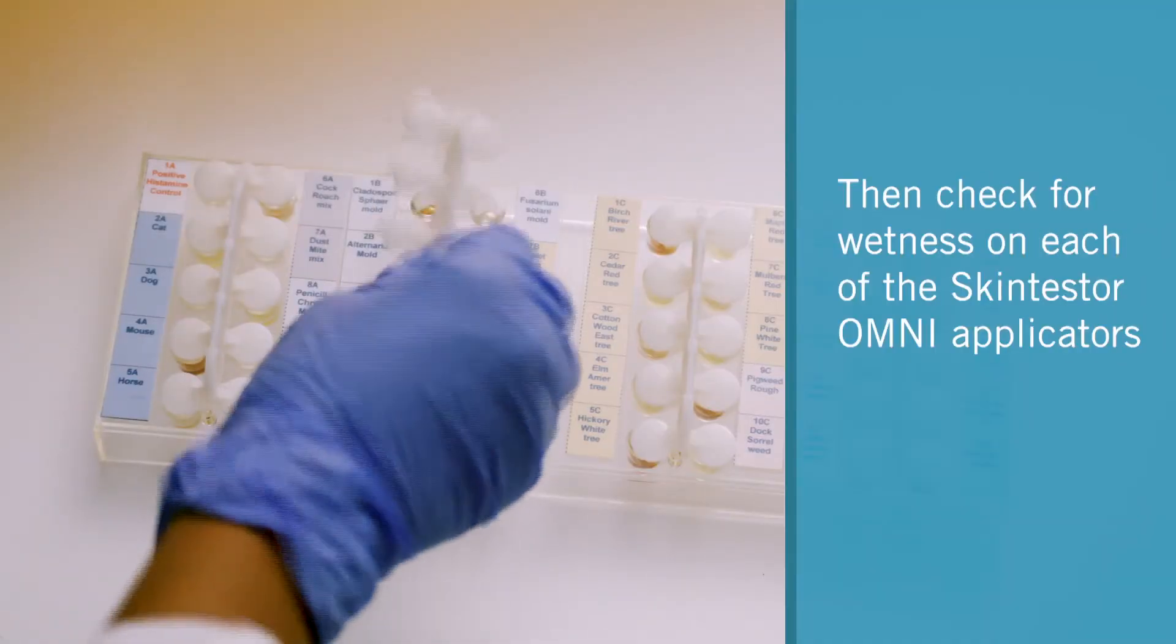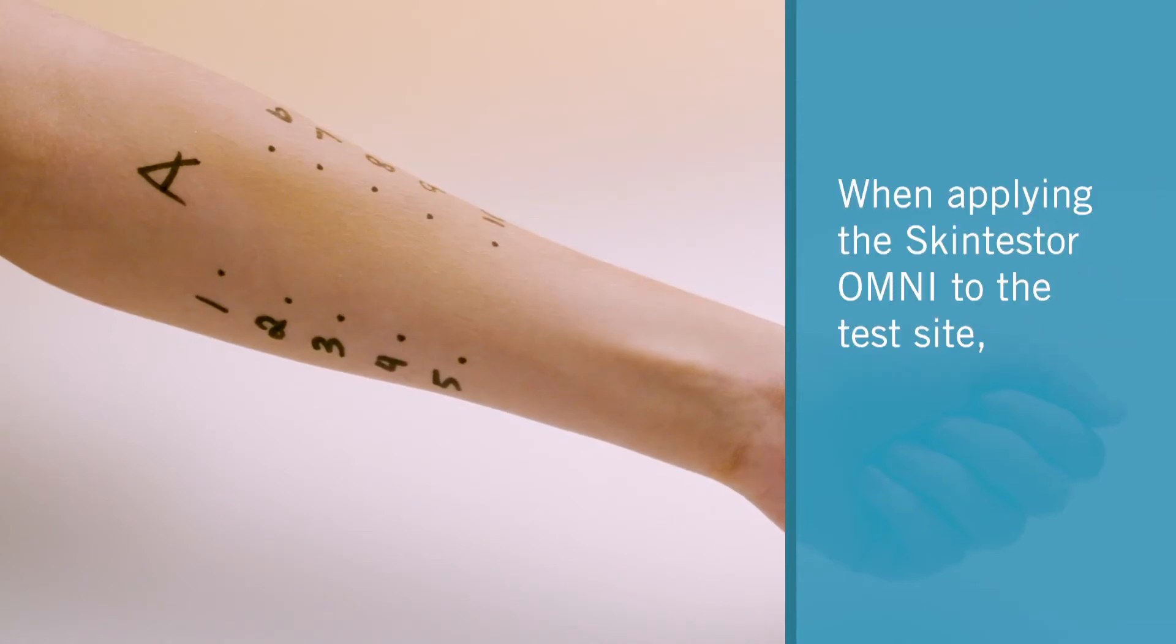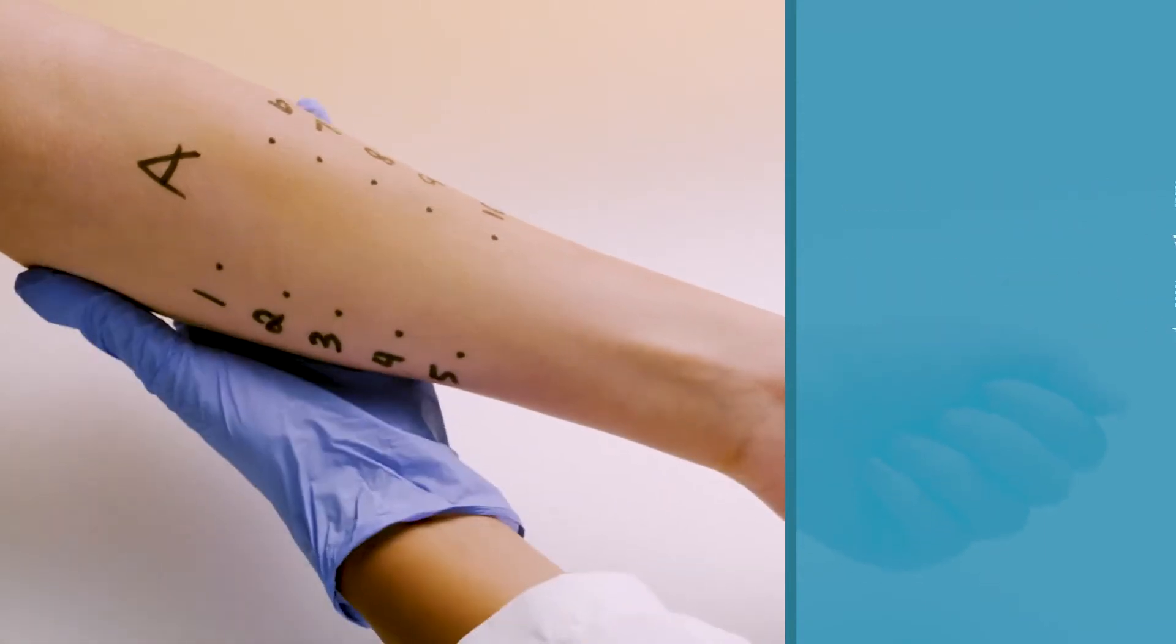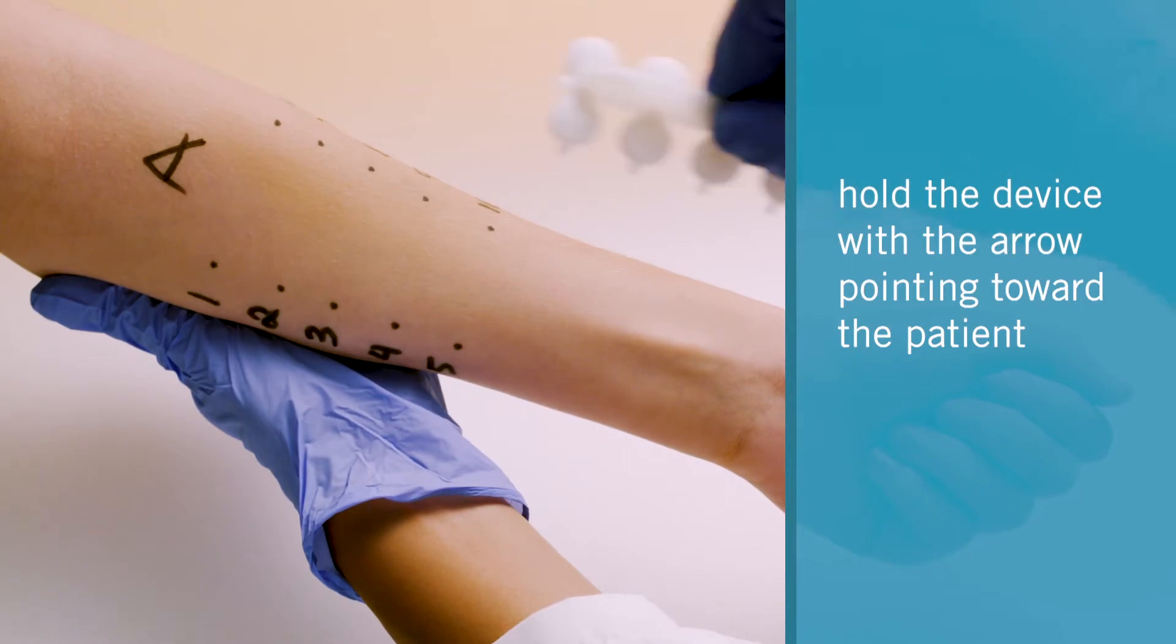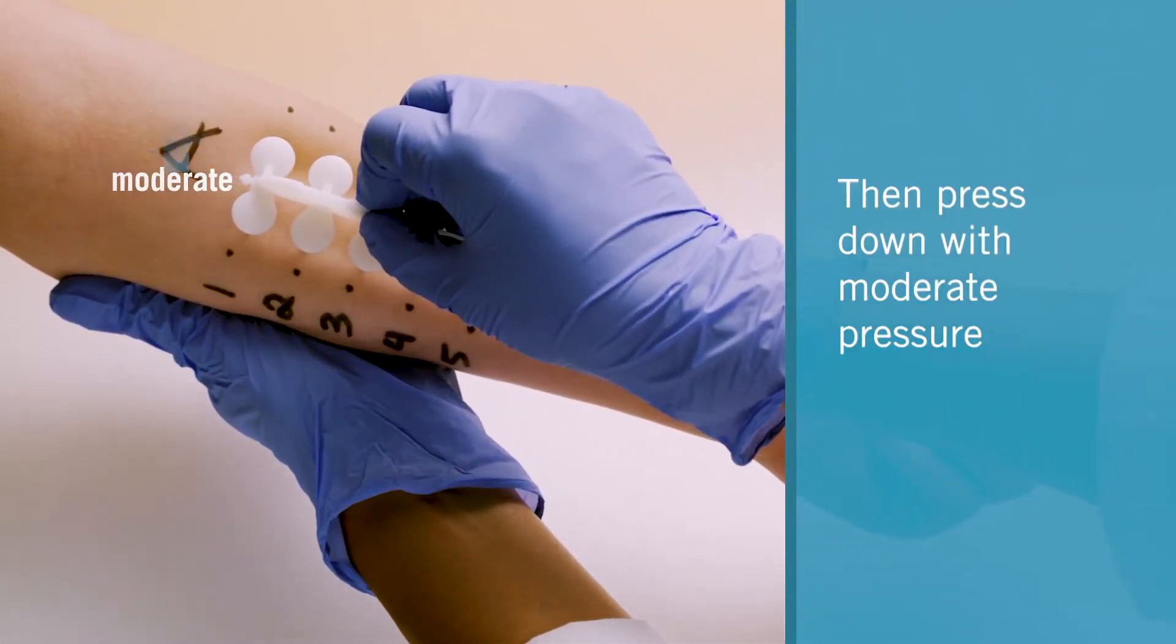Check for wetness on each of the Skin Tester Omni applicators. When applying the Skin Tester Omni to the test site, hold the device with the arrow pointing toward the patient. Then press down with moderate pressure.